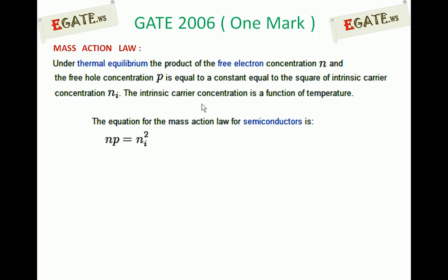Based on the type of extrinsic semiconductor, n and p will become — one will be majority carrier and the other will be minority carrier. In case of n-type, n will be majority carrier and p will be minority carrier. In case of p-type semiconductor, n will be minority carrier and p will be majority carrier.